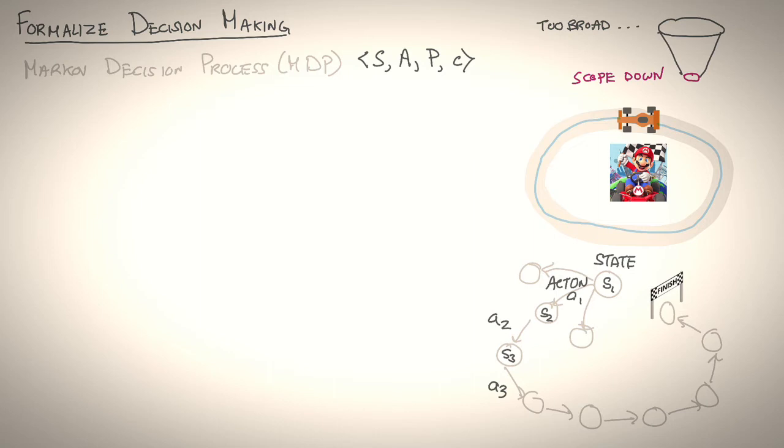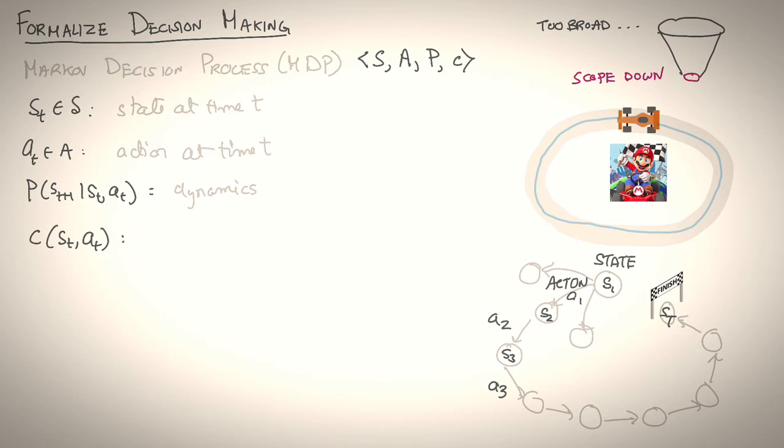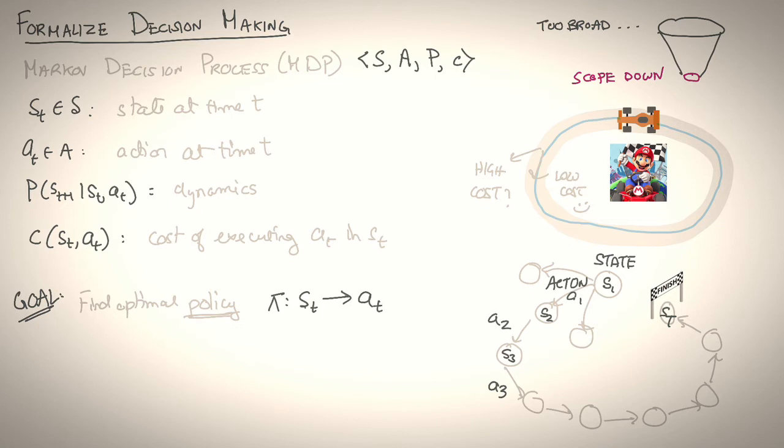Let's return back to our formulation. We can now write ST belongs to S as being the state of the robot at time T. AT belongs to A as being the action taken at time T. P(ST+1 | ST, AT) being the probability of transitioning to state ST+1 given that you executed action AT at state ST. And finally, C(ST, AT) being the cost of executing action AT in state ST. Goal is to find an optimal policy pi, that's a mapping from states to actions, that minimizes the overall value J(pi), which is the cumulative sum of costs at every time step, with states and actions being drawn from the distribution induced by the policy pi.